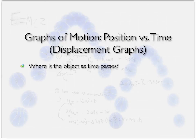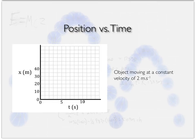Position is where you are. Displacement is how far you've actually gone. You've got to be very careful about the difference — position is where am I, and displacement is how much my position has changed, so how far have I gone. First I have to ask where is the object as time passes, and we're going to use graphs to do that. On this position-time graph, the y-axis is marked for position and the x-axis for time. Those two axes are pretty important.